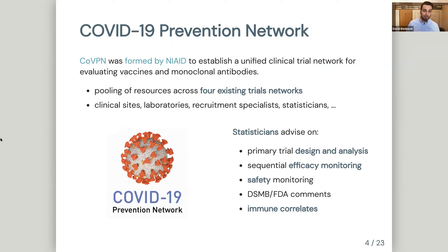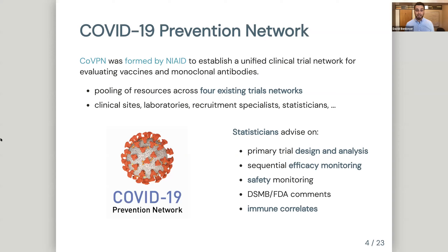The small role statisticians have played has been through the establishment of the COVID-19 Prevention Network (CoVPN), formed by NIAID by bringing together four existing clinical trials networks. This leveraged existing frameworks for evaluating vaccines — through clinical sites, laboratories running immune response assays, recruitment specialists going into communities to gain trust and increase enrollment in diverse populations, and a group of statisticians, many of whom have worked together for years at the Fred Hutch on HIV vaccines.